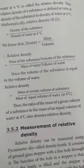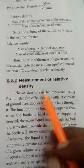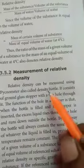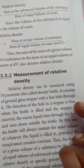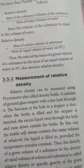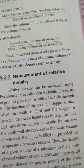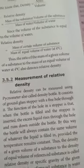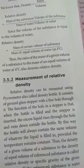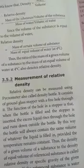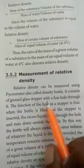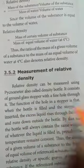The next one: measurement of relative density. Density can be measured using a Pycnometer, which is also called the density bottle. It is a glass density bottle. It consists of a ground glass stopper with a fine hole through it.